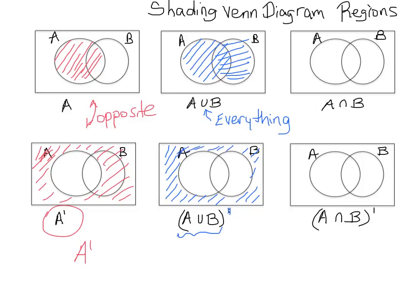Now, A intersect B — whenever you see this symbol, it is what the two sets have in common, what they share. Looking at the diagram, they share the middle, so that is A intersect B.